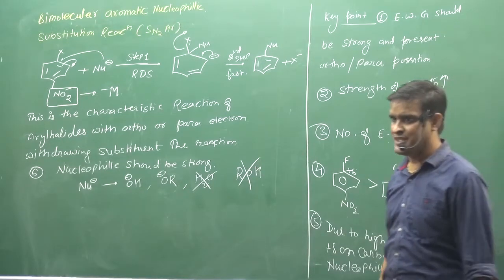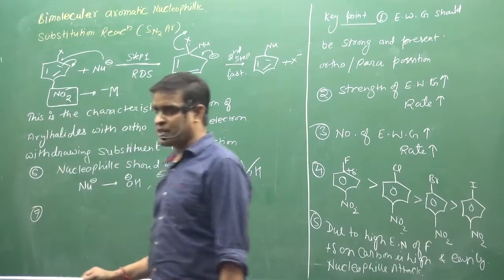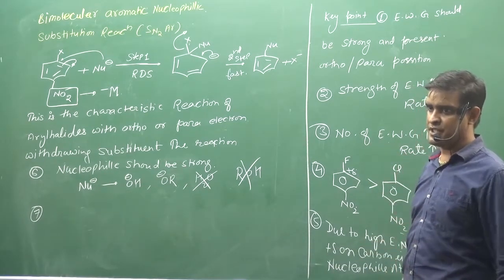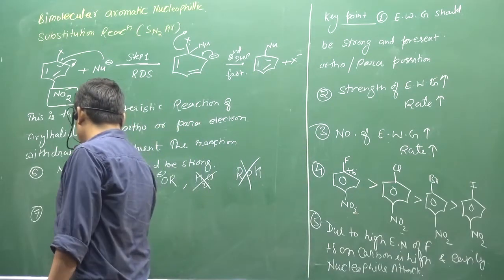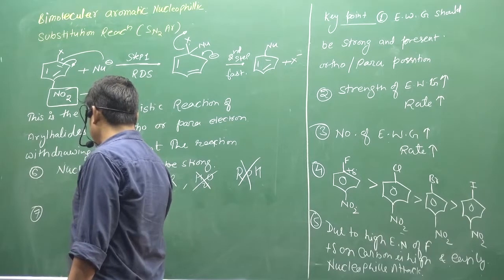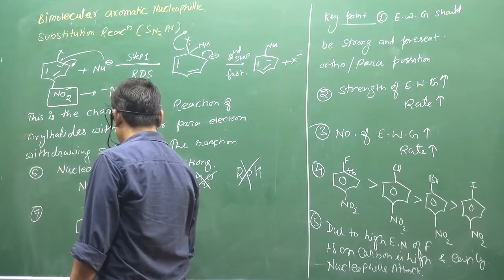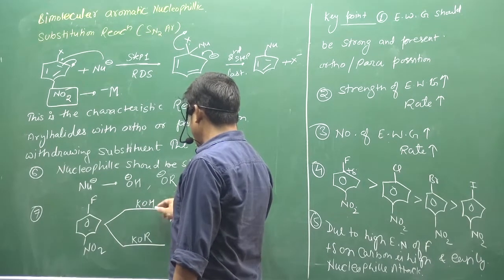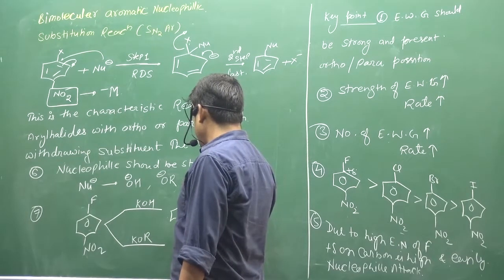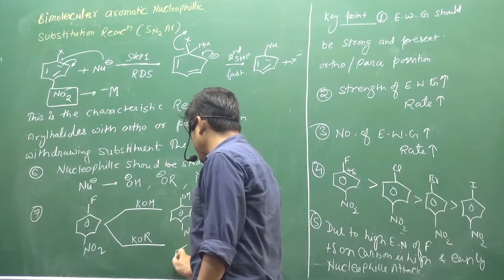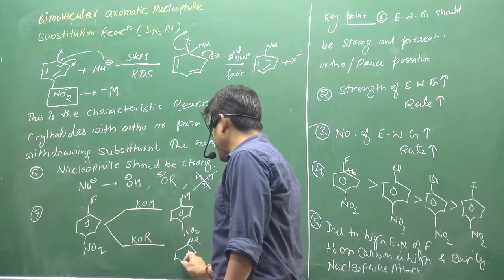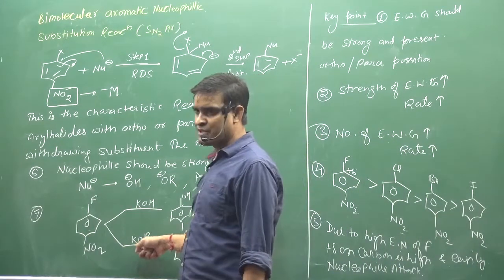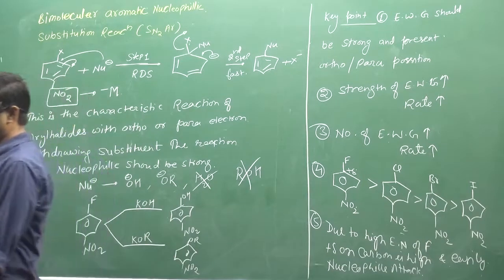When you have more electron withdrawing groups, the reaction will go faster. As an example: if you have fluorine and NO2 on the ring, and you use KOH or KOR, the reaction will replace fluorine with OH, and NO2 will remain as NO2. Similarly with OR and NO2. You can easily do this with sodium or potassium alkoxide, or sodium or potassium hydroxide. This is the revision of SN2AR.